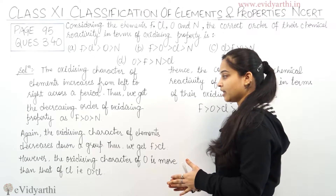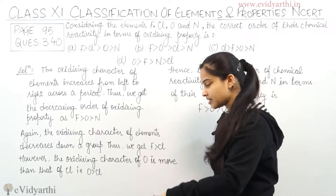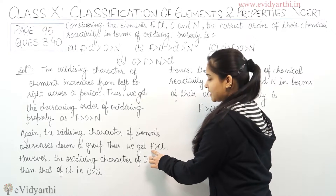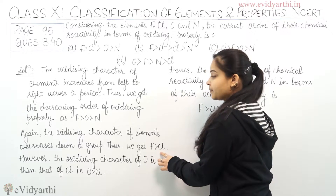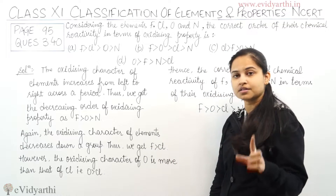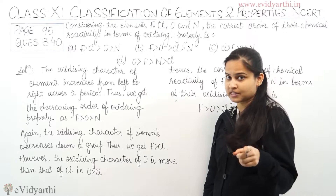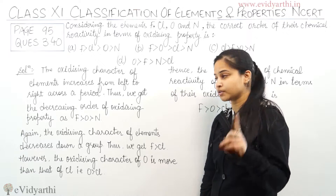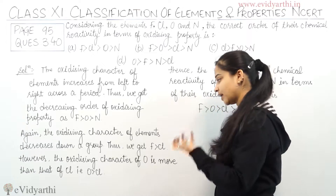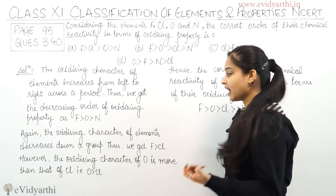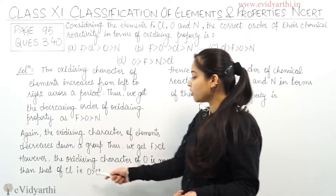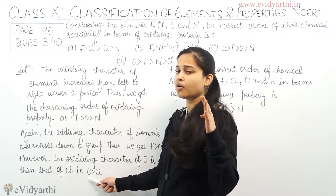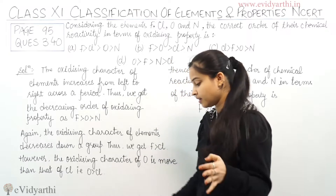The oxidizing character of elements decreases down the group, so fluorine has more oxidizing character than chlorine. However, the oxidizing character of oxygen is greater than that of chlorine — meaning oxygen has more oxidizing character than chlorine.